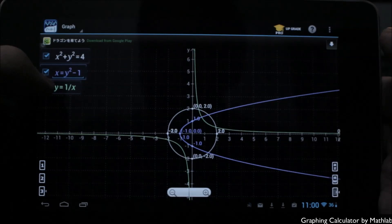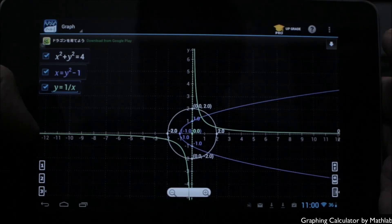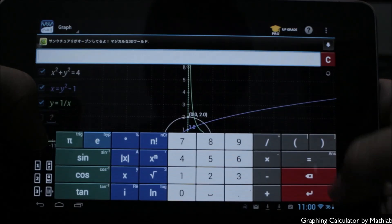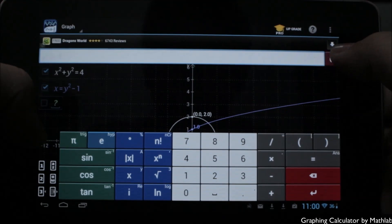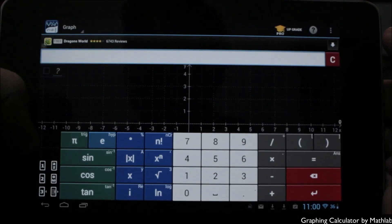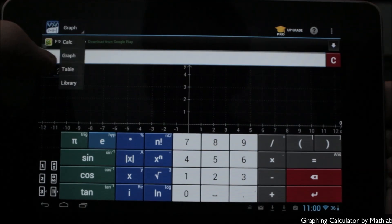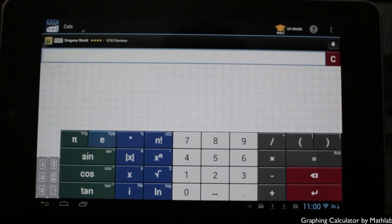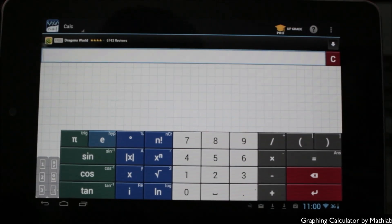That about sums up Graphing Calculator by Math Lab. Again, this is a free app in the Google Play Store. You can also check out the pro upgrade available via a $5.99 in-app upgrade to get more features. This is a scientific calculator, a graphing calculator, a fraction calculator, algebra calculator, matrix calculator, and more, all in one easy-to-use, powerful application. You can find this in the Google Play Store today.